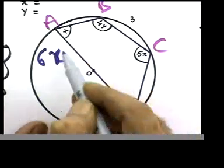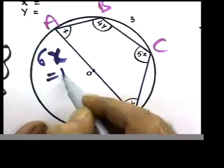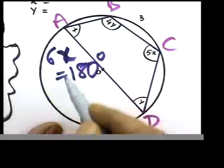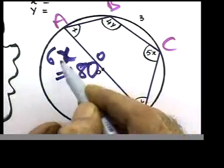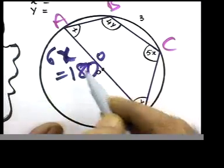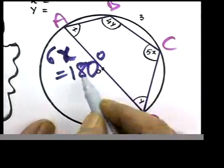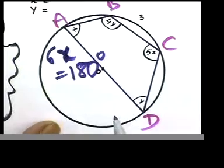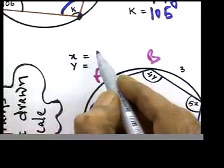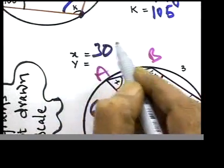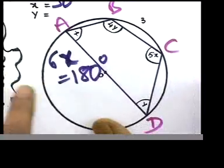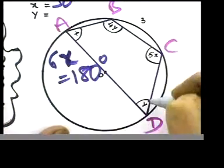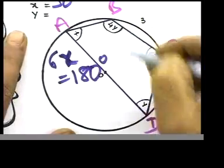So 6x equals 180. If 6x equals 180, then 1x must be 180 divided by 6, which gives 30. Fill in the blank: x equals 30 degrees. That's simple basic algebra. Now let's look at the other pair — it's 4y and 1y.